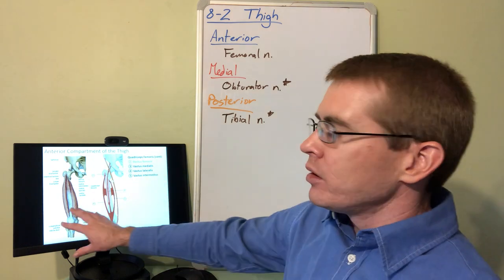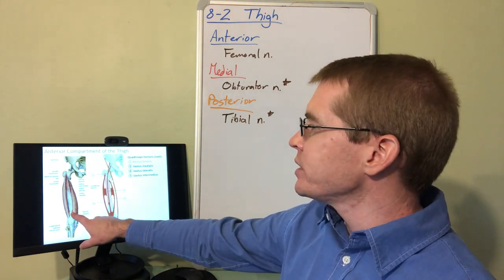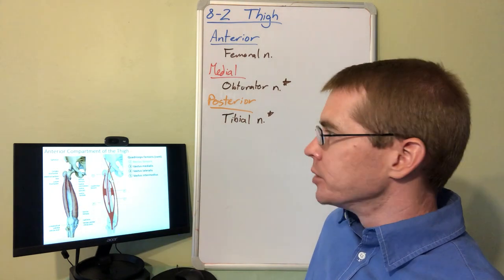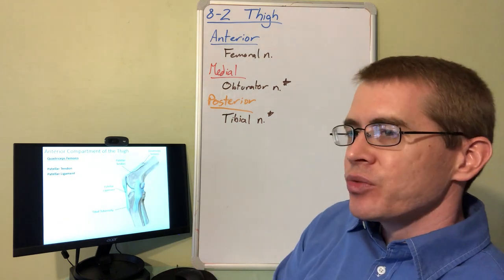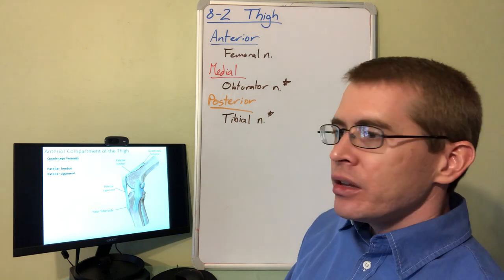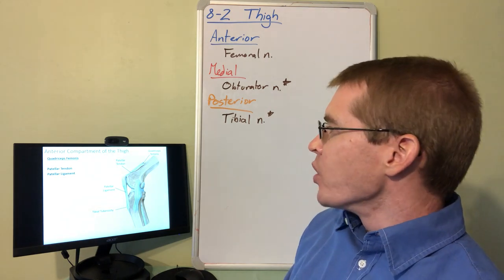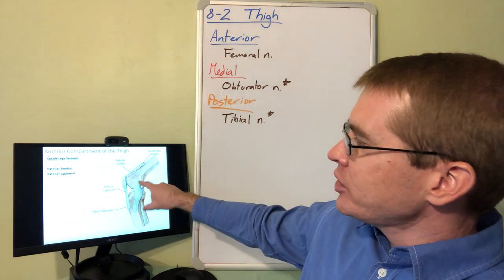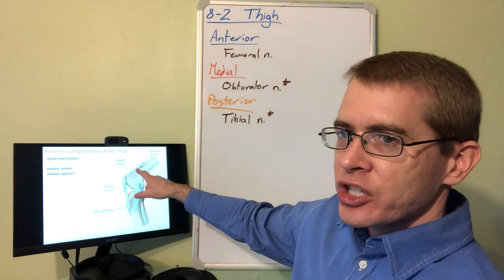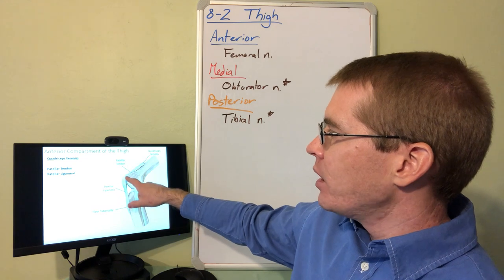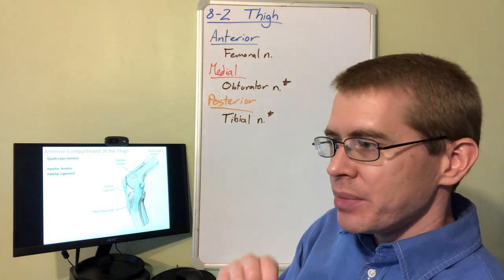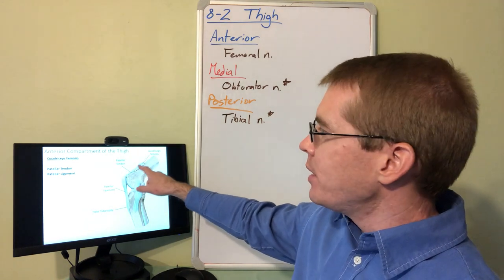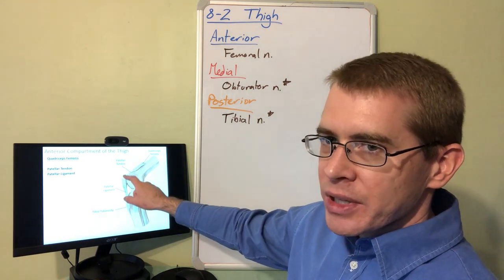Here we've gone a little deeper in the anterior compartment of the thigh. Now we can see the vastus intermedius muscle, the fourth muscle of the quadriceps femoris group. The attachment of quadriceps femoris is on the tibial tuberosity anteriorly. It attaches through two different structures, the patellar tendon and the patellar ligament, with the kneecap or patella in between them.